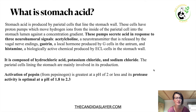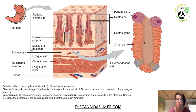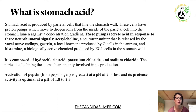What is stomach acid? Stomach acid is produced by parietal cells that line the stomach wall. Here you have a picture of the stomach lining and the gastric glands. If we zoom in, here are the parietal cells. These cells have proton pumps which move hydrogen ions from the inside of the parietal cell into the stomach lumen against a concentration gradient.